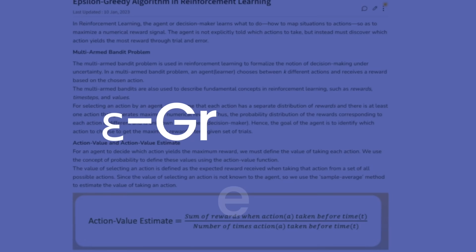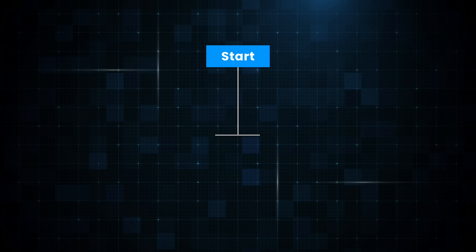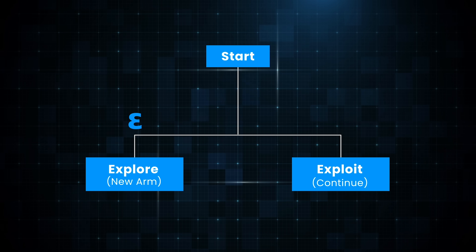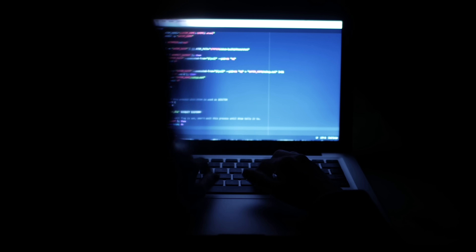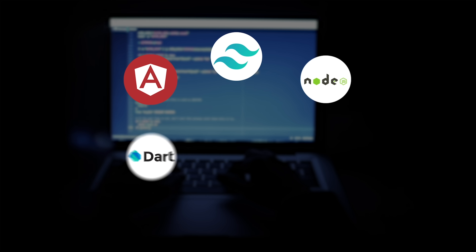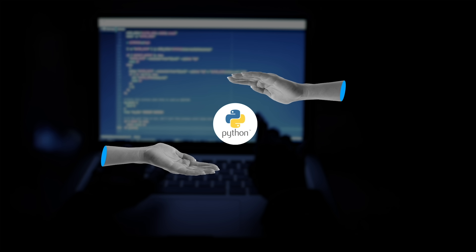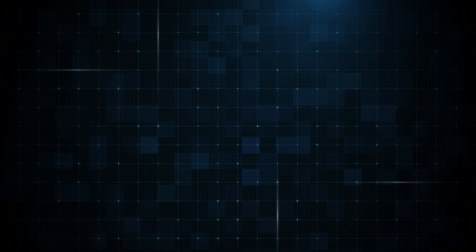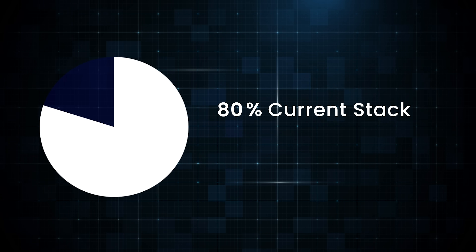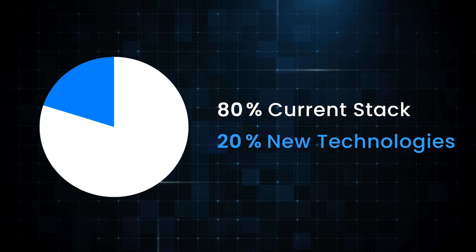One simple algorithm to solve this is the Epsilon-Greedy Algorithm. With probability epsilon, choose a new machine to explore, and with probability 1-epsilon, continue on the current machine to exploit. As a programmer, you are always gambling with your career. New technologies are popping up every day. Should you stick to what you know, or branch out and learn something new? The key is balance. Using the Epsilon-Greedy approach, maybe dedicate 80% of your time to your current stack and 20% to exploring new technologies. This way, you stay current without sacrificing your expertise.